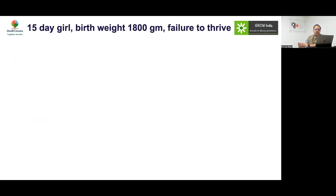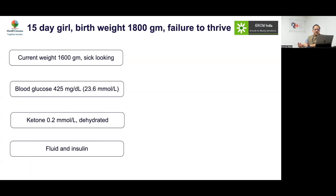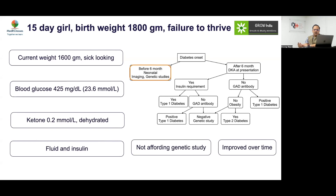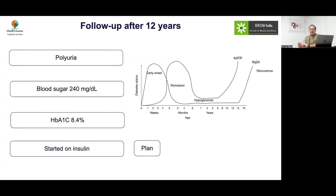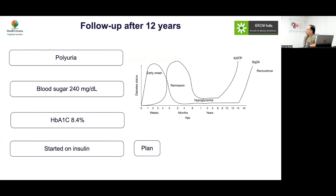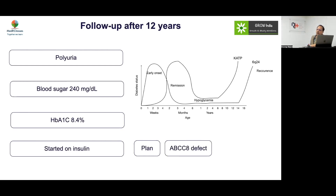Case 5: A 15-day-old girl, birth weight 1800 g. On follow-up, she may develop recurrence of disease later on. For a transient form, the expected course is: initial diabetes, then hypoglycemia in the infancy period, followed by recurrence later that again responds to sulfonylurea. This turned out to be an ABCC8 defect — doing very well on glibenclamide.